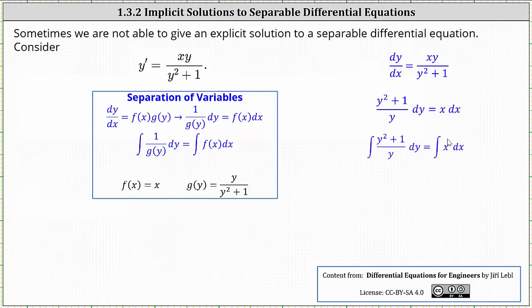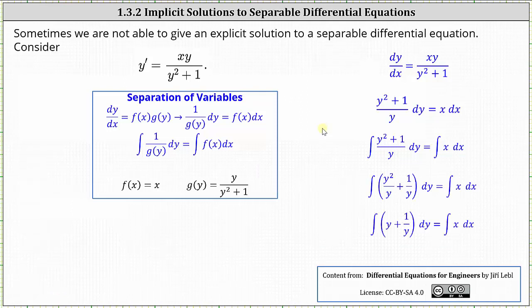And now we integrate both sides of the equation. Let's simplify the integrand function on the left. Because we're dividing by a monomial, we can write this as y squared divided by y, which is y, plus one divided by y. And now we integrate both sides of the equation.